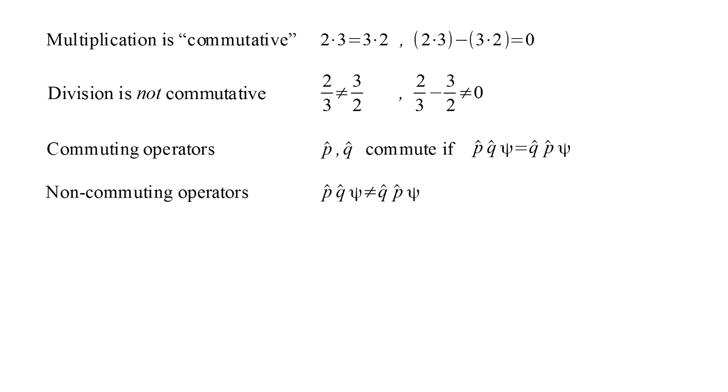Conversely, two operators are non-commuting if the order does matter. It's convenient to define the commutator of two operators as the difference of these two orders of operation. Then a zero commutator means the operators commute, and a non-zero commutator that they don't.